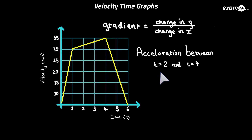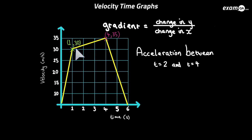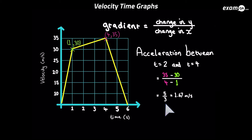Now we want to work out the acceleration between t = 2 and t = 4. We're going to do the same thing — find some nice integer coordinates on that part of the line, then do change in y over change in x. We've got 35 − 30 for the y's and 4 − 1 for the x's, giving us 5 over 3, which is 1.67 meters per second squared — that's the acceleration in that part of the journey. Remember: the gradient is the acceleration.